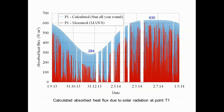The figure shows the calculated absorbed heat flux due to solar radiation at point T1, taking into account sun all year round (blue spikes) and actual insolation measurements (red spikes). Gaps represent water spilling over the dam crest. In the summer, a fairly good matching between the daily maximums of heat fluxes is evident, while in the winter there are deviations. The main cause is difficulty in measuring insolation at low positions of the sun and therefore longer radiation path length through the atmosphere.